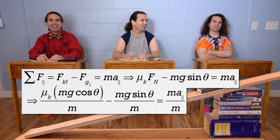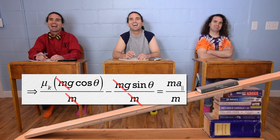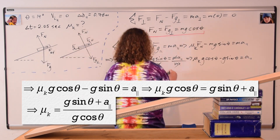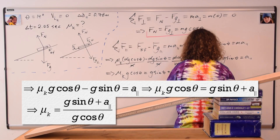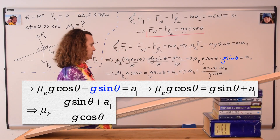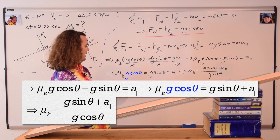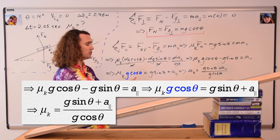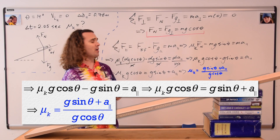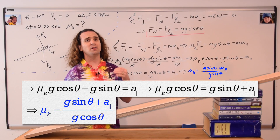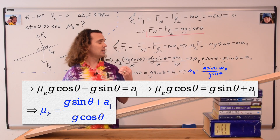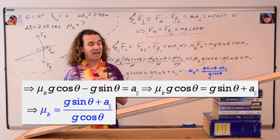Everybody brought mass to the party — mass cancels. We add acceleration due to gravity times sine theta to both sides, then divide both sides by acceleration due to gravity times cosine theta to get: the coefficient of kinetic friction equals acceleration due to gravity times sine of the incline angle plus acceleration in the parallel direction, all divided by acceleration due to gravity times cosine of the incline angle.